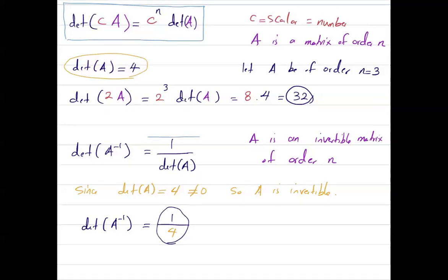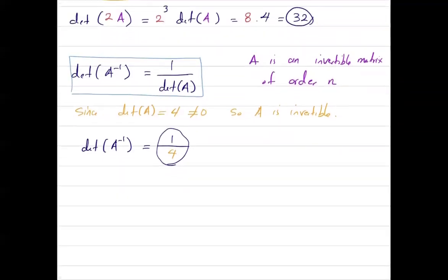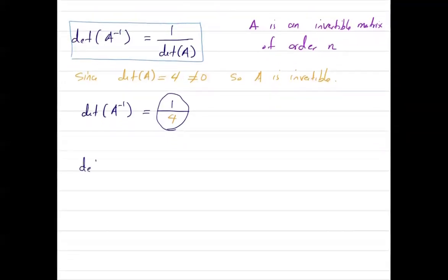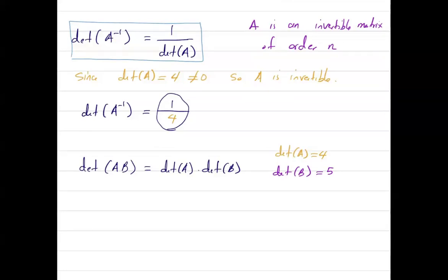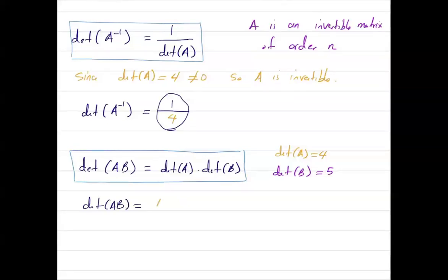Another important property for matrices is their multiplication. If you have two matrices A and B and I ask you to find the determinant of their multiplication, it is the determinant of A times the determinant of B. Suppose matrix A has determinant 4 and matrix B has determinant 5. Then the determinant of A times B equals 4 times 5, which is 20.